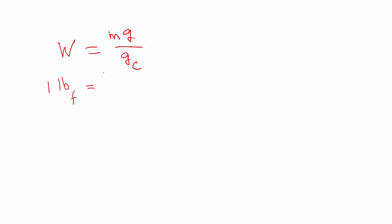So the mass is one pound mass multiplied by G. The gravitational acceleration is 32.174 foot per second square and we just leave the GC there.